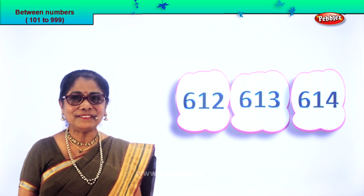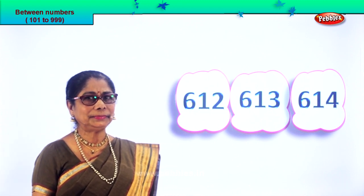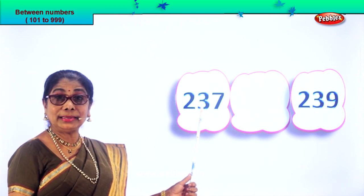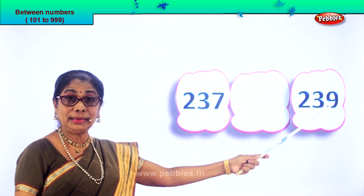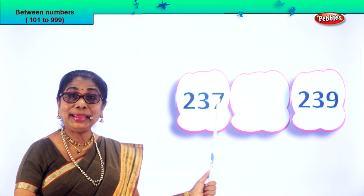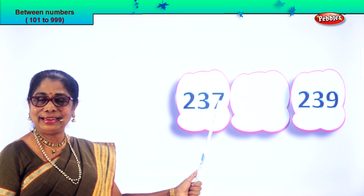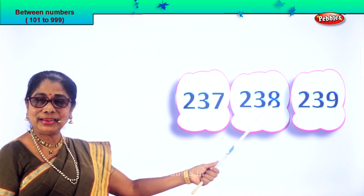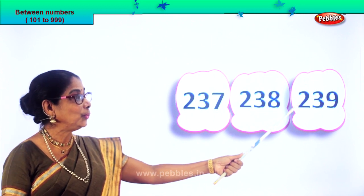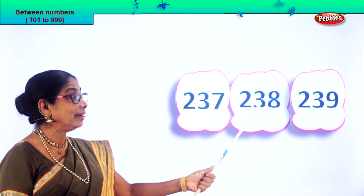Did you enjoy finding the number between? Let's have another set of numbers. Read it: 237 and 239. After 7, the number that follows will be 8, after 37 comes 38. So 237, the next number is 238. The number between is 238.